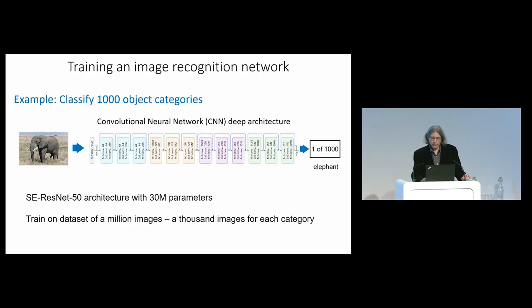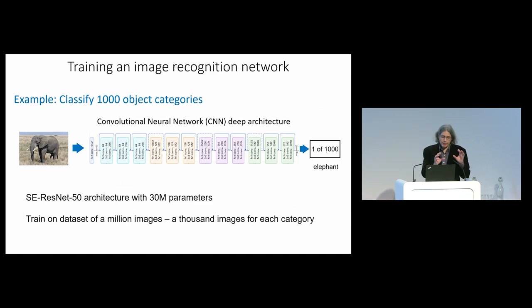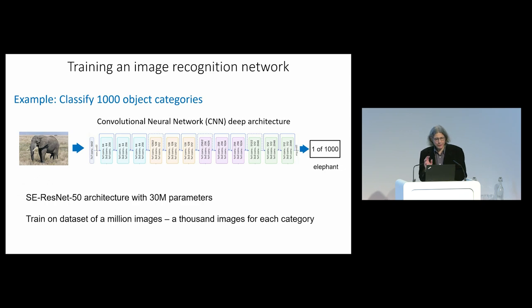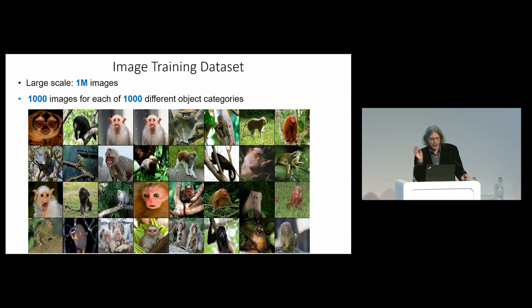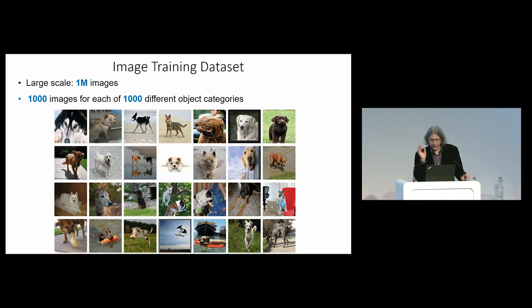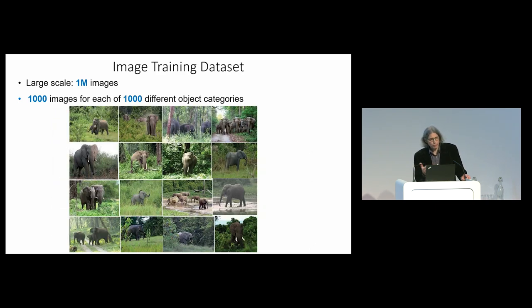For the recognition I was showing you earlier — recognising animals and vehicles — we were using a network trained to classify a thousand different object categories. It takes in an image, in this case an elephant, and the output is a choice of one of the thousand categories. This network has 30 million parameters, so to train it you need a very large dataset: it was trained on a million images — a thousand images for each of the thousand categories. That means somebody had to find a thousand images of monkeys, a thousand of dogs, a thousand of elephants — a colossal amount of work.